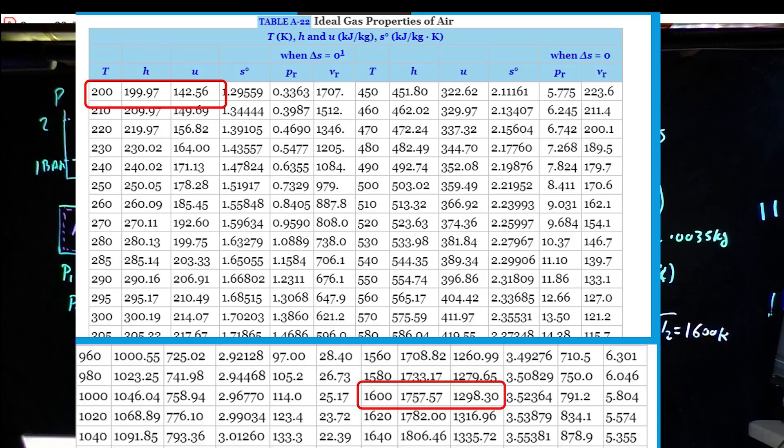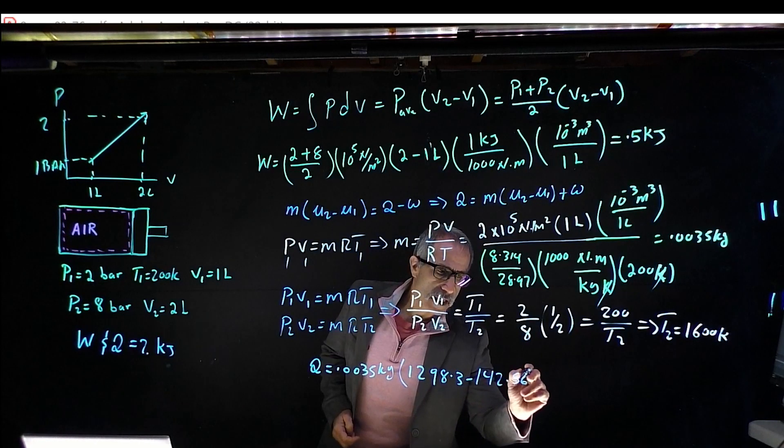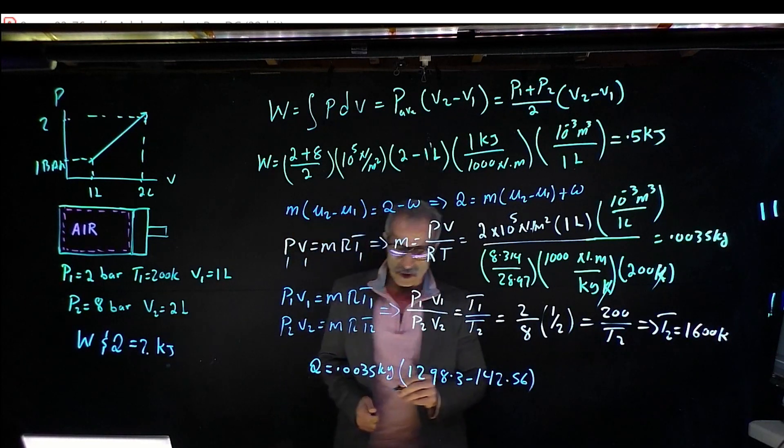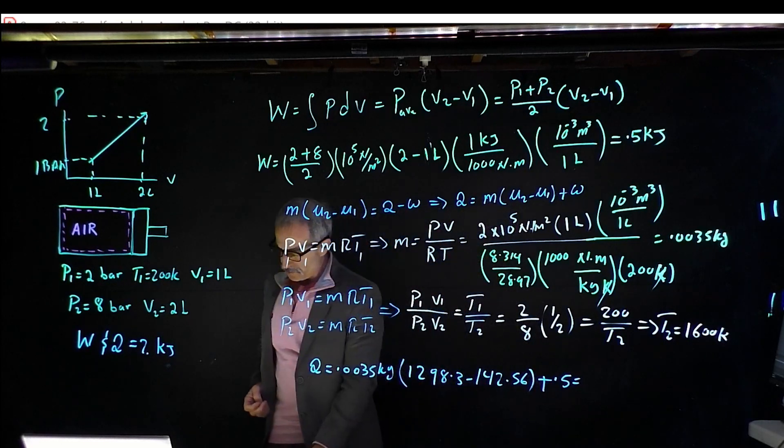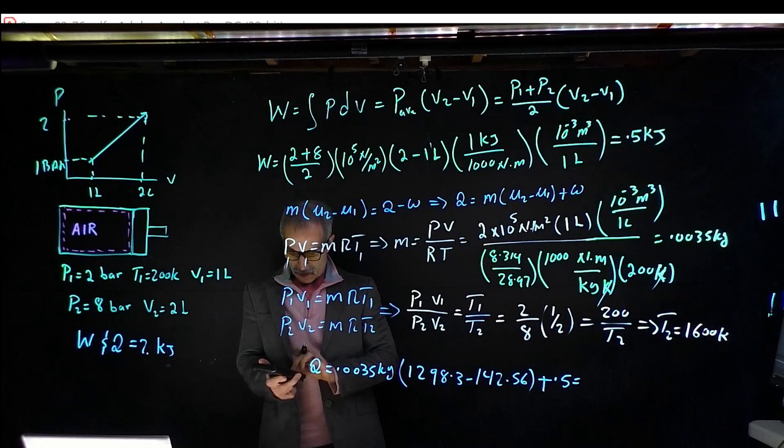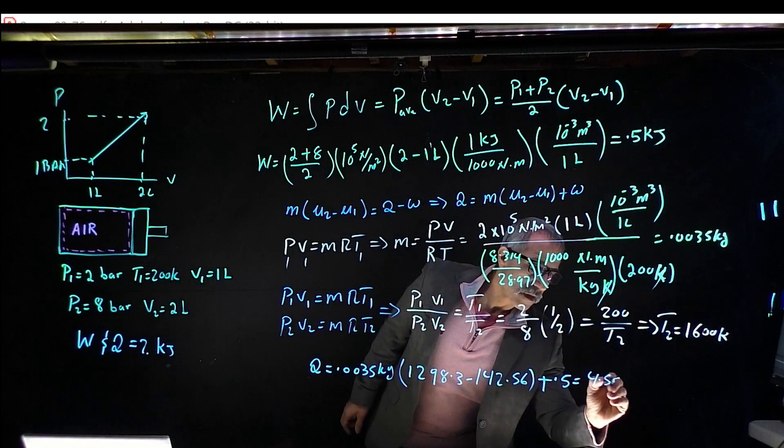Now we've got to go to table A22. Q equals 0.0035 kilograms. Table A22 is going to say for U2 at 1600 degrees is 1298.3 minus, and then at 200 degrees it's going to be 142.56. That's in kilojoules, and it's going to come out to, plus W plus 0.5 which was W. So that comes out to 4.55 kilojoules.